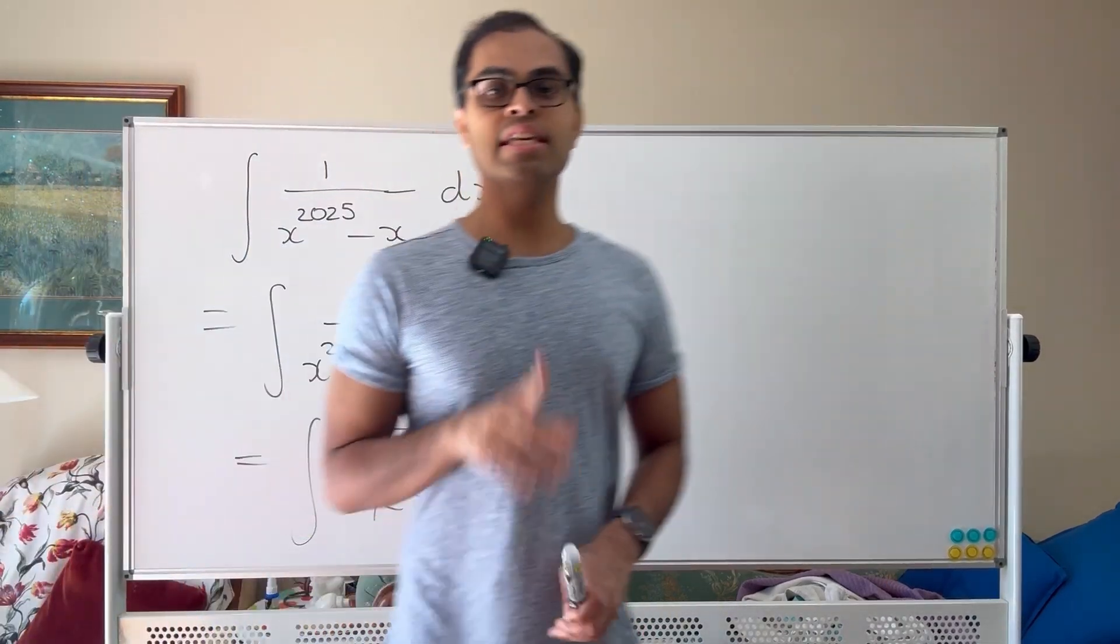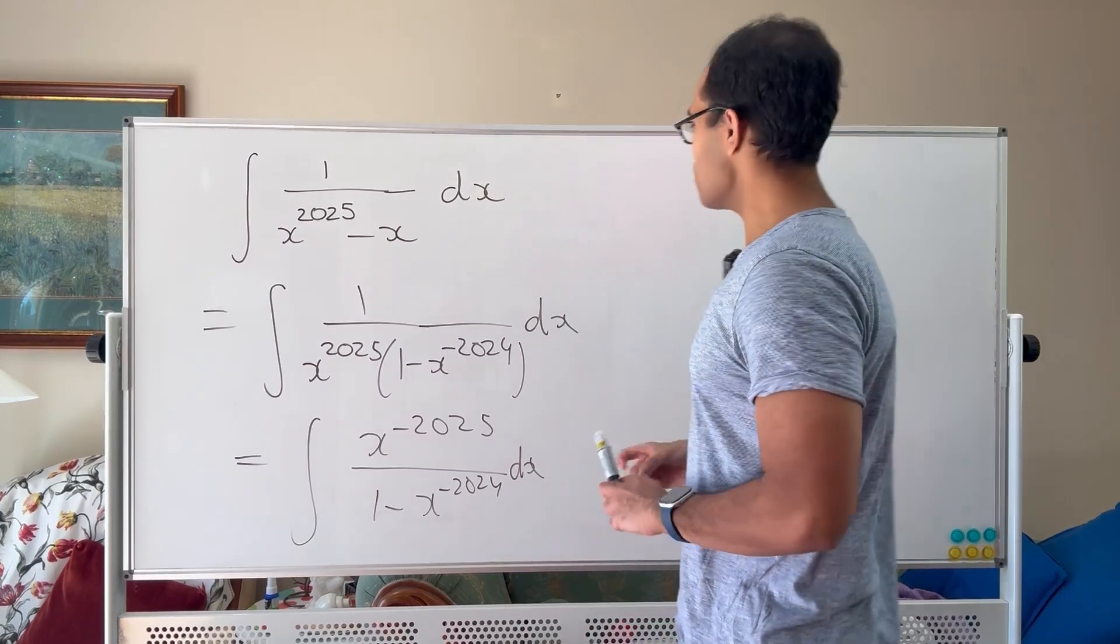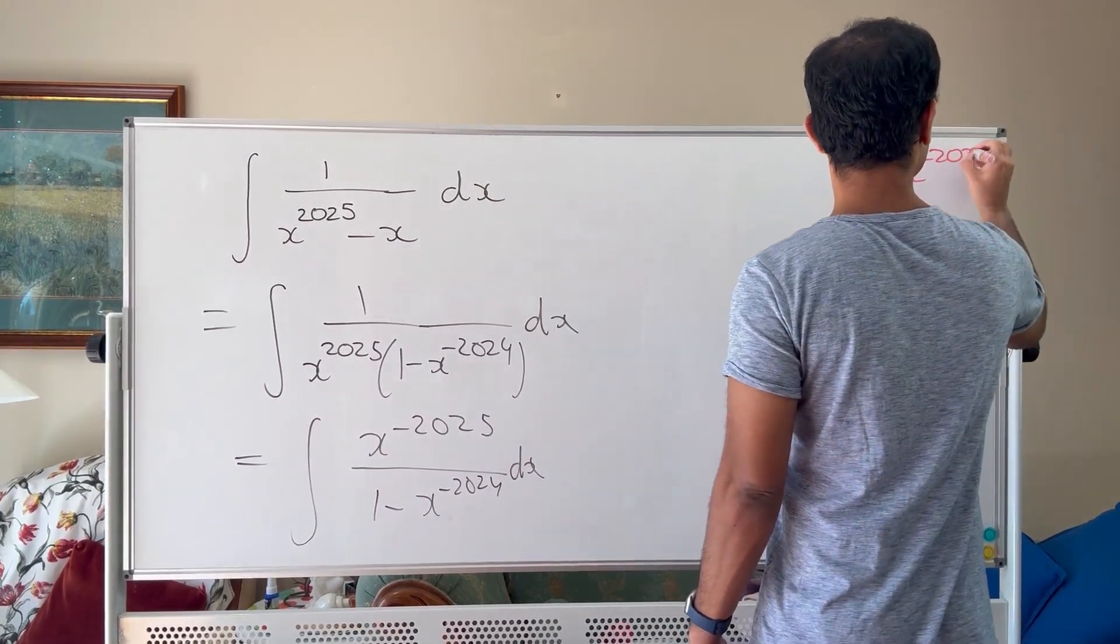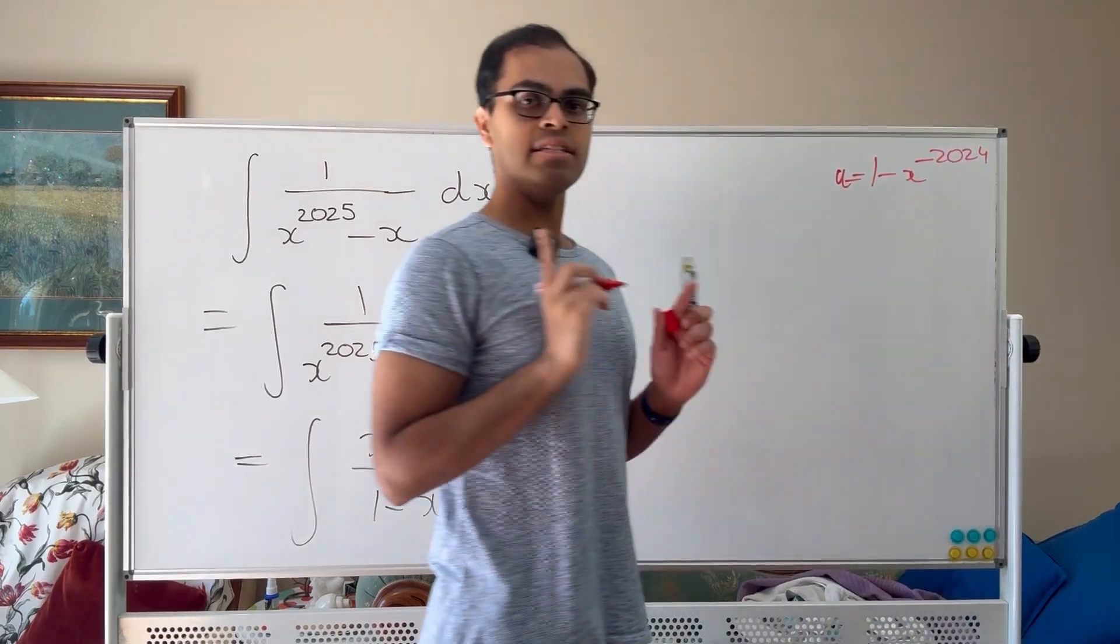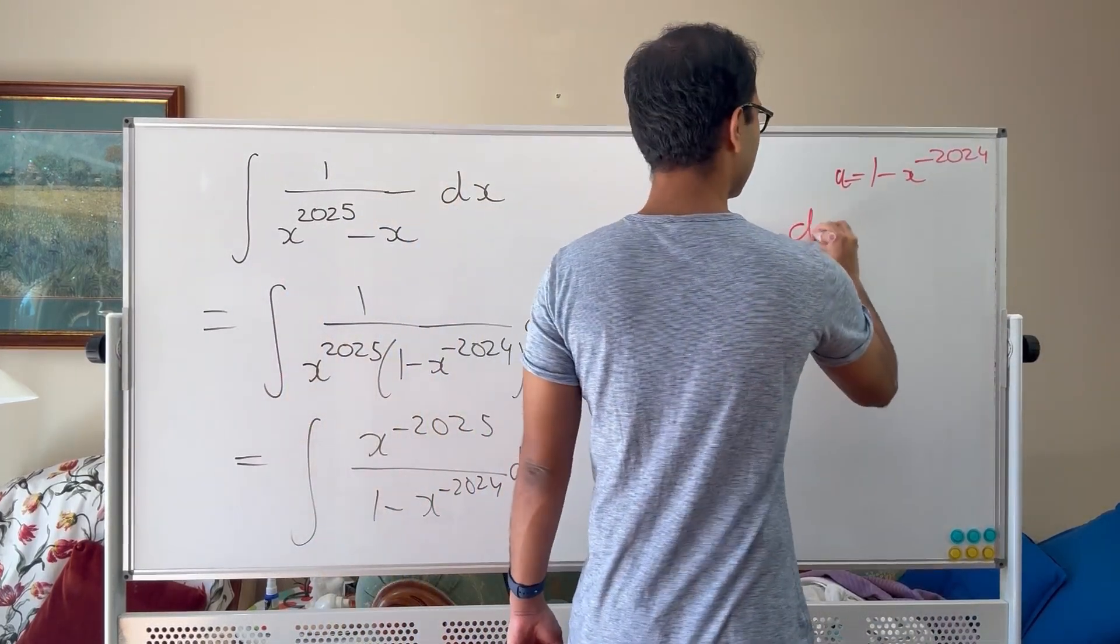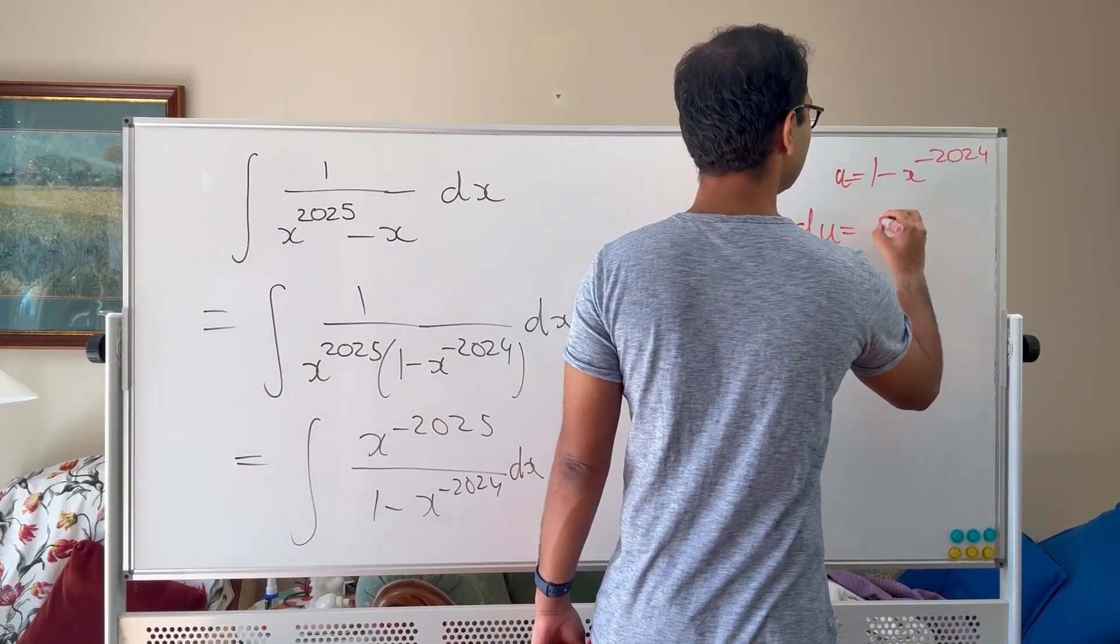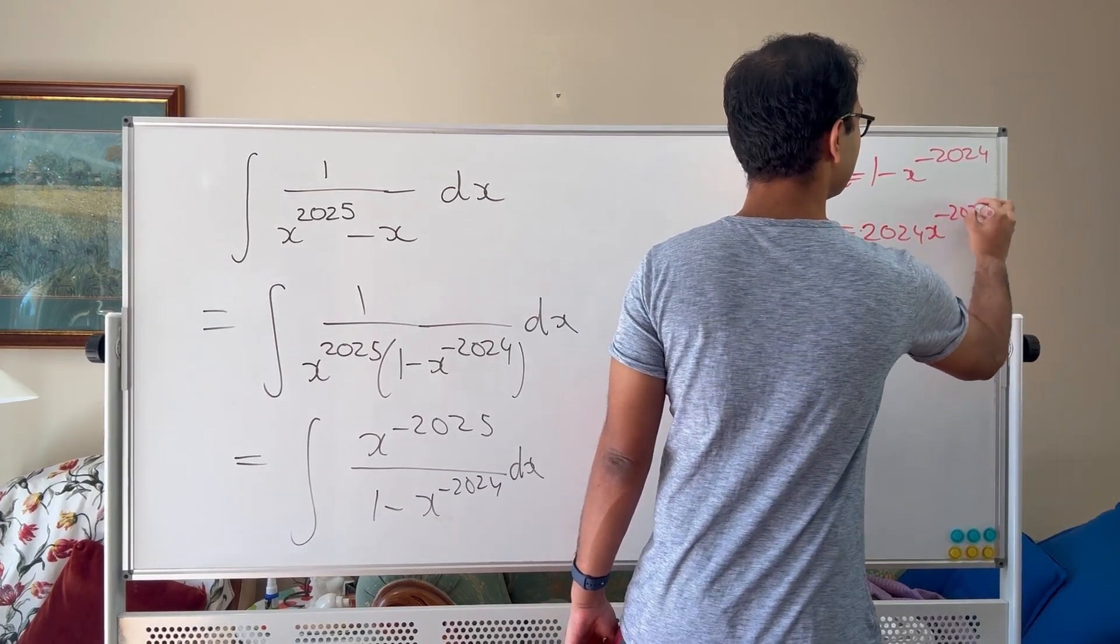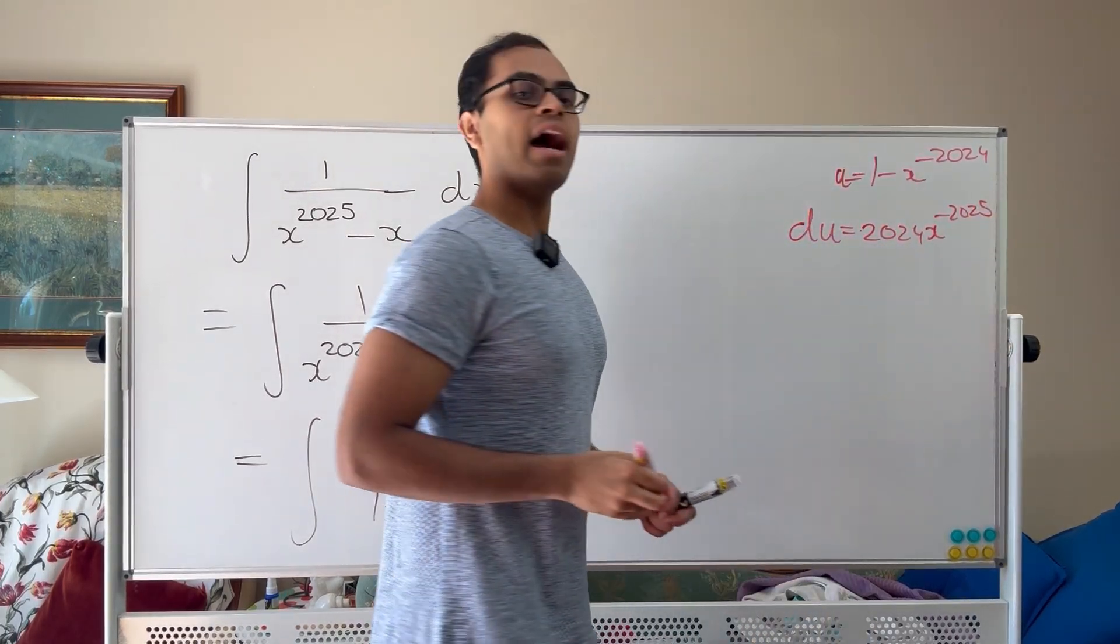Now what we're going to do is a u substitution. We're going to write out u is going to equal to 1 minus x to the negative 2024, and then du, using the power rule, we're going to have du is going to equal to 2024 times x to the negative 2025 dx.